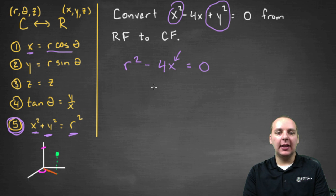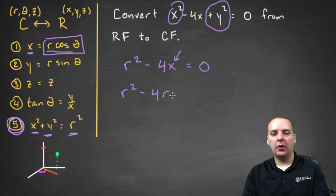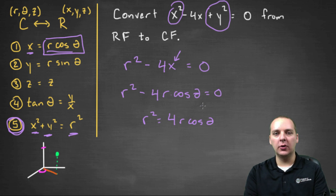The only thing I can do with just an x is convert it to r cosine theta. So r squared minus four r cosine theta equals zero, or r squared equals four r cosine theta if you add that to the right. You could even divide both sides by r to get the simplified equation r equals four cosine theta.